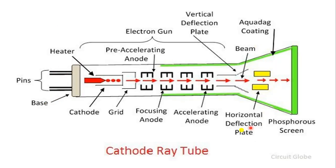Here in this diagram of cathode ray tube, some pins are there — total 4 pins. So here we will provide the voltage, it will convert into current, and after doing this whole process it will show some visualization in the output on the screen.